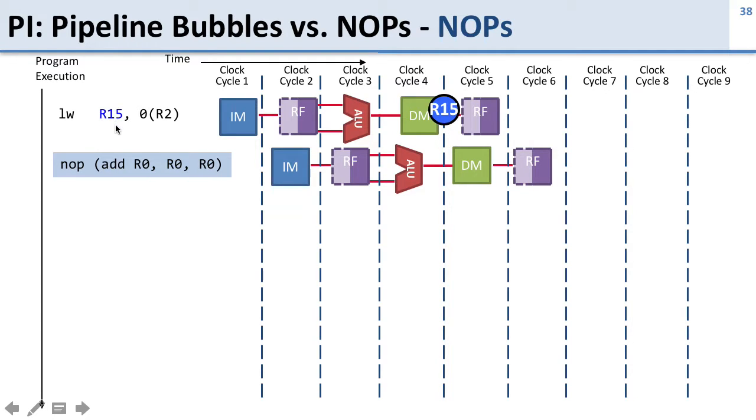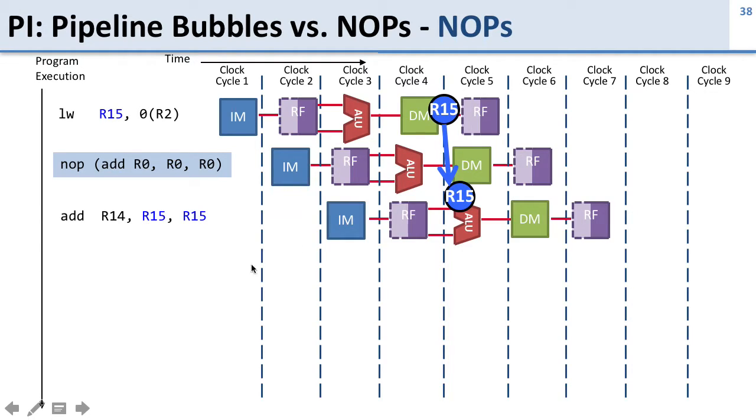Load an instruction to R15, and then the results will be ready at the end of the memory stage from the data memory. Then we want to use it again in another instruction's input to R15. In order to do that, we can forward it. We have to forward at the beginning of the ALU cycle, which means we have to get it from the end of that cycle to the beginning of that cycle. So they can't be back to back. We have to have a NOP in the middle.